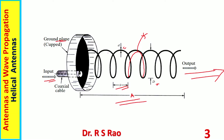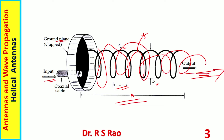When input is given, it radiates rightward as the current travels along the length of the coil. Because of impedance mismatch and reflections, a small amount of current also flows in the opposite direction toward the feed end, resulting in some radiation in the direction opposite to the main output. This backward radiation is unwanted. The ground plane reflects this radiation back toward the main beam — toward the receiver side. Coaxial cable is used as feed in most cases.